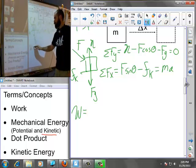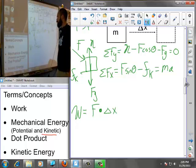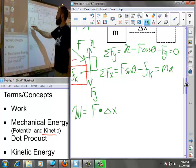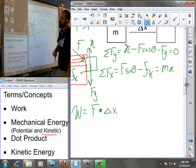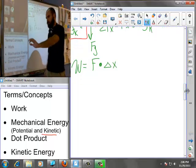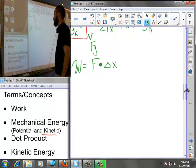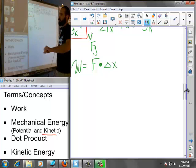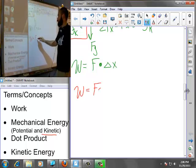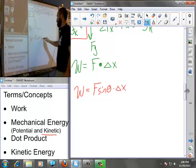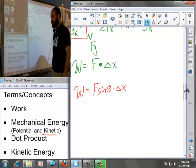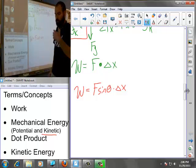From here, what work is being done on this object? It is F dot delta x, but there are two forces that are working parallel to displacement: the force of kinetic friction and the portion of F that is parallel to displacement. So, there are two works being done on this object, one from the force pushing it and the other opposing the motion from friction.